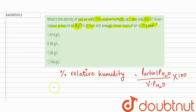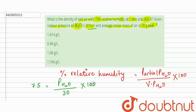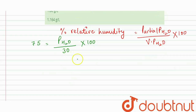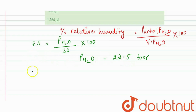We are given the percentage relative humidity as 75. So: 75 = (partial pressure of water / 30) × 100. From here, the partial pressure of water equals 22.5 torr.